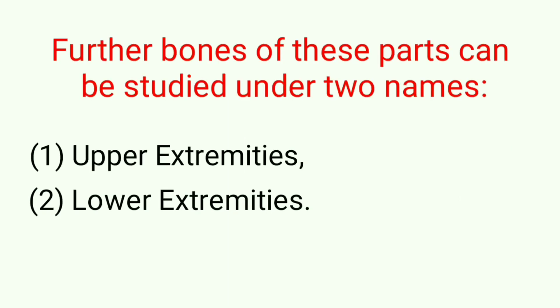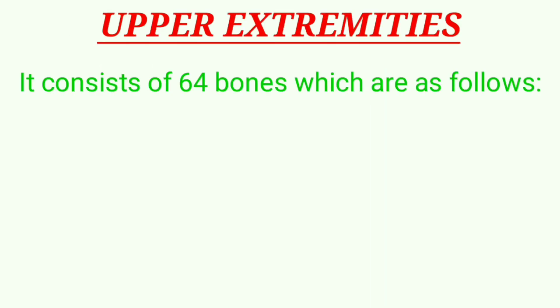Further, the bones of these parts can be studied under two names: upper extremities and lower extremities. Upper extremities consist of 64 bones, which are as follows.